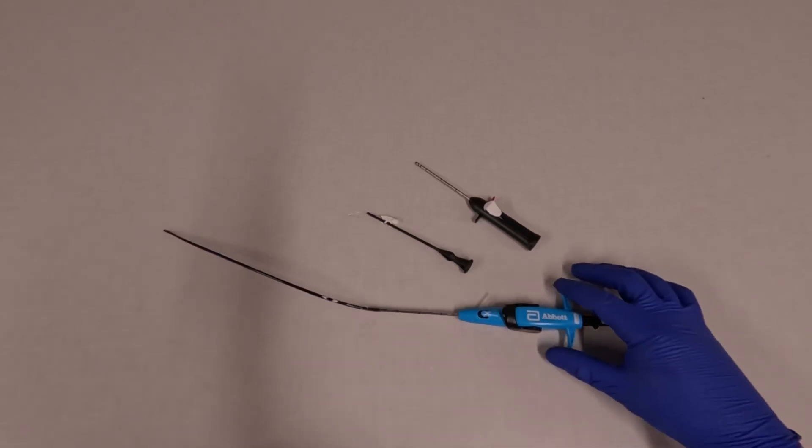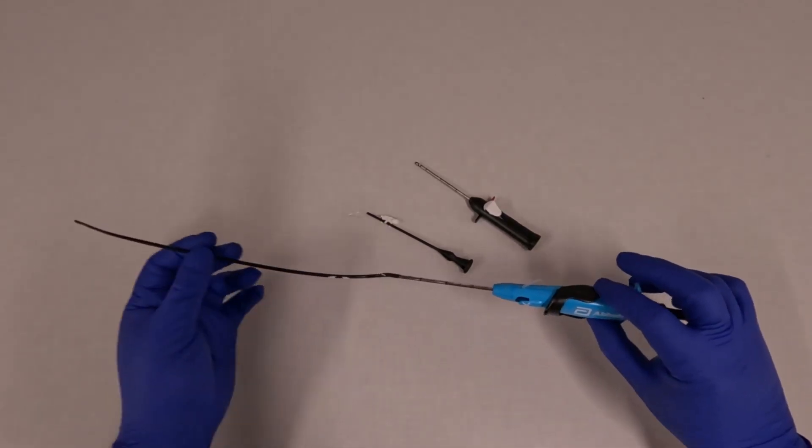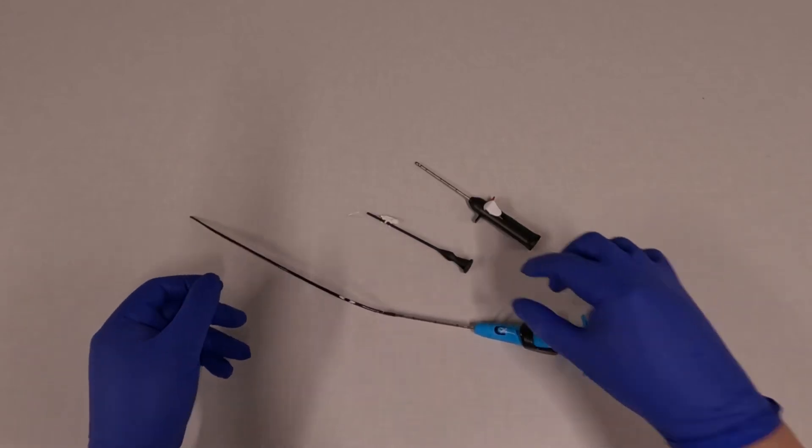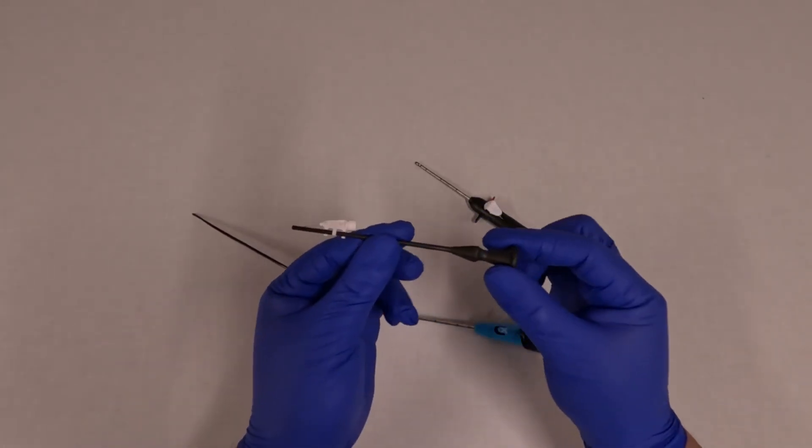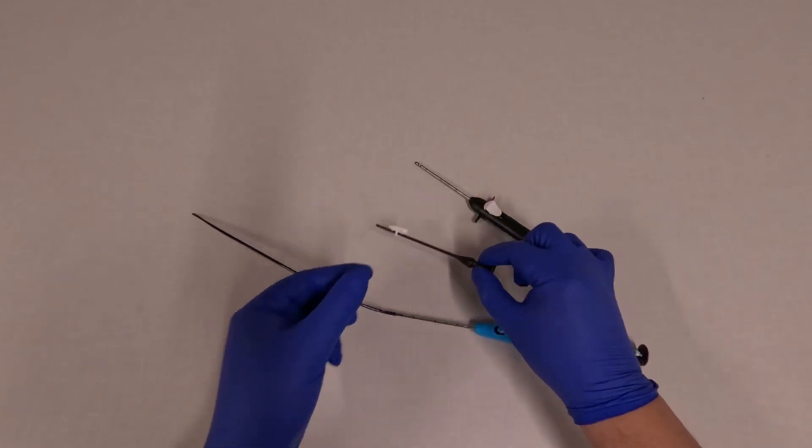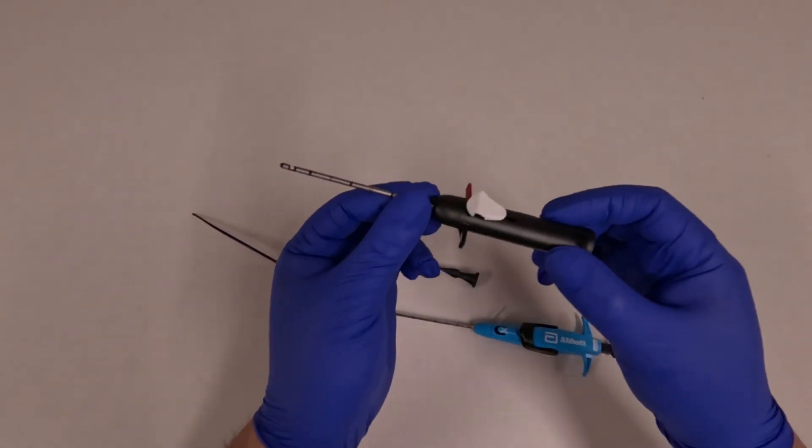When you open the Perclose package you'll get three components. The first one is the device itself, the second one is the suture puller, and the third one is the suture cutter.